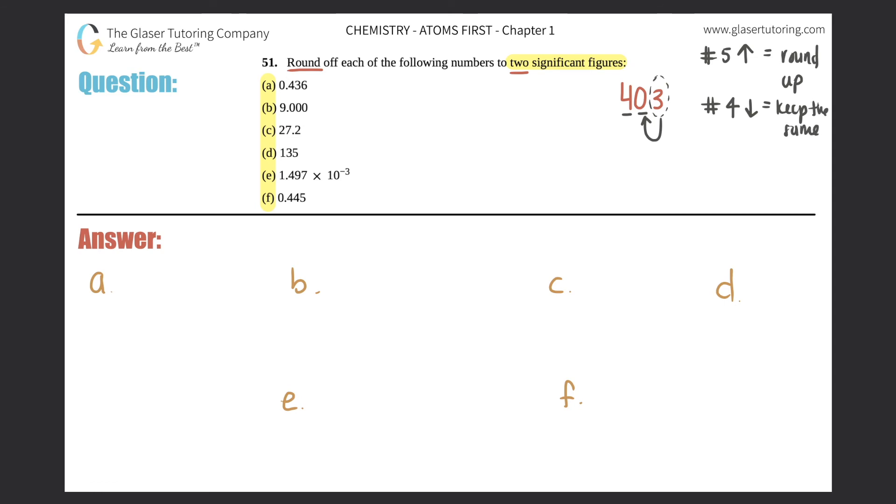So since this number right here, the next one that's not significant, because we want two sig figs is a three, it's not powerful enough to round up the zero. So it would just be four, zero, this zero stays the same. And this would go away. But we need a placeholder still, right?